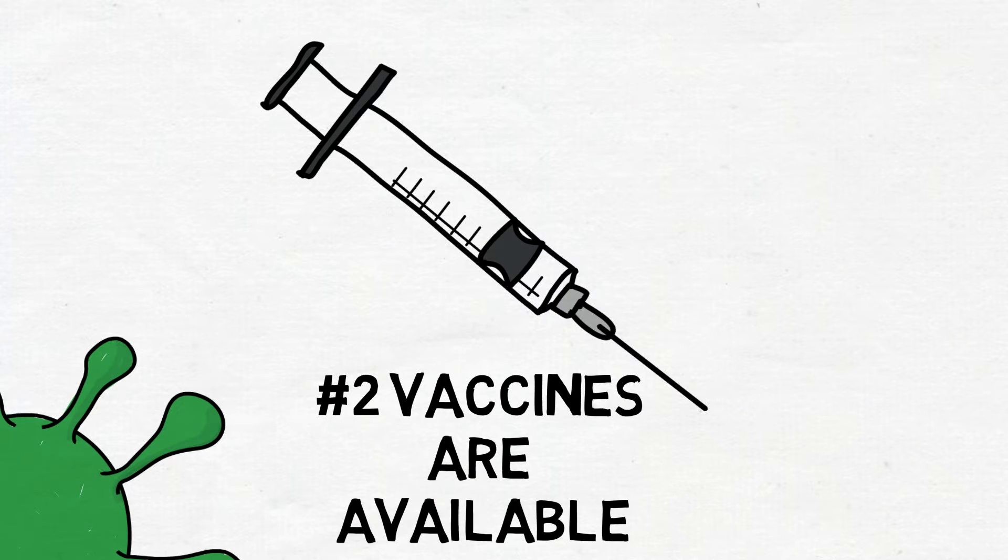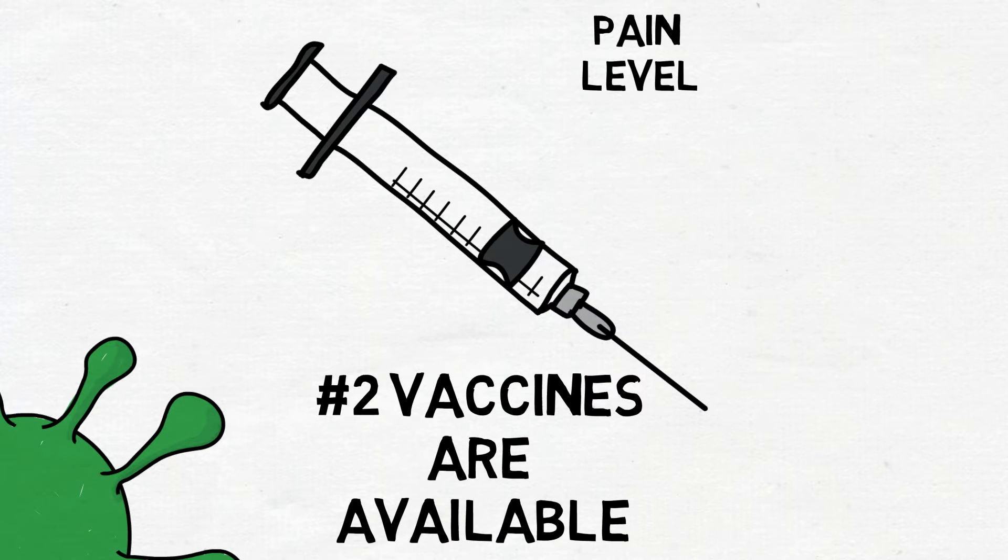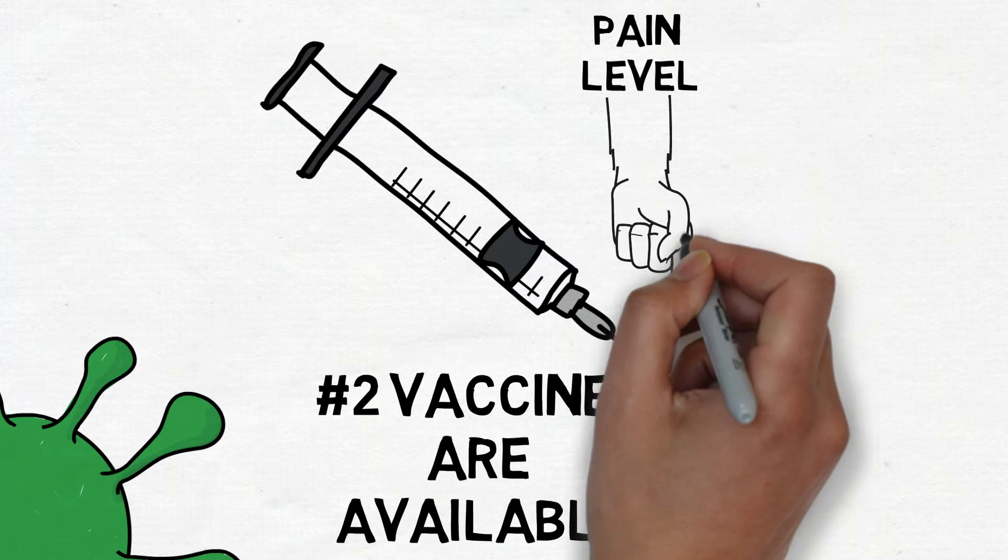However, getting a shingles vaccine doesn't immunize you from getting shingles. Just about 50% of people who are vaccinated are protected from shingles. For those who do develop shingles despite getting vaccinated, the pain of the resulting condition can be less severe and chances of developing chronic pain decrease.